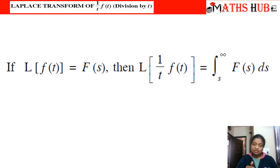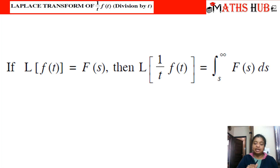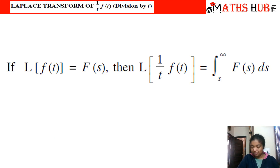So in the previous formula, if we are integrating f(t) from 0 to t, on the right hand side F(s) is getting divided by s. Now here we are taking f(t) divided by t, meaning we are dividing the function by t, so on the right hand side we are integrating it from s to infinity.